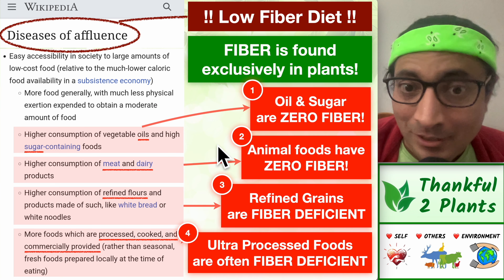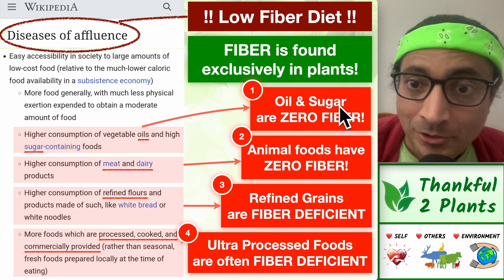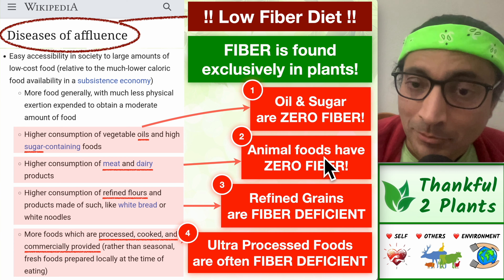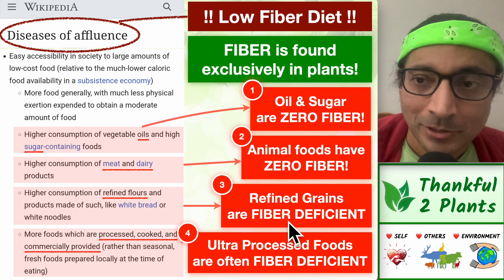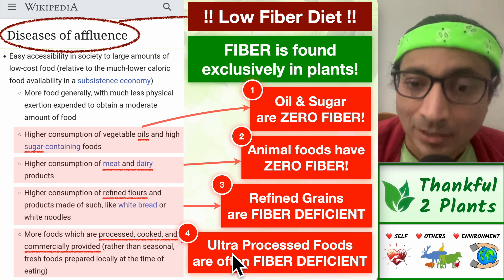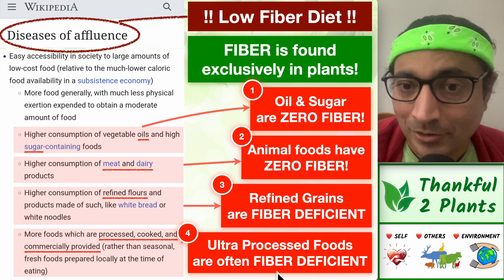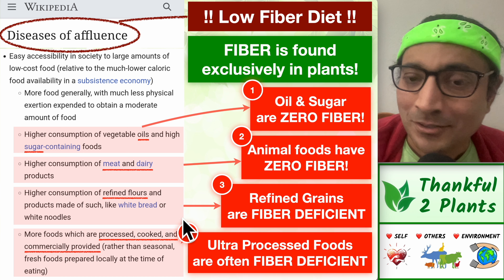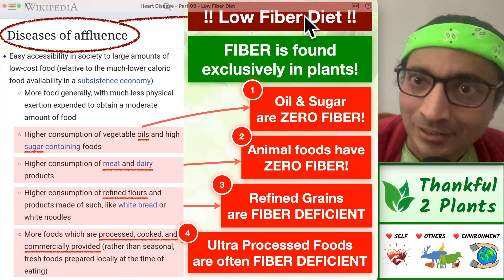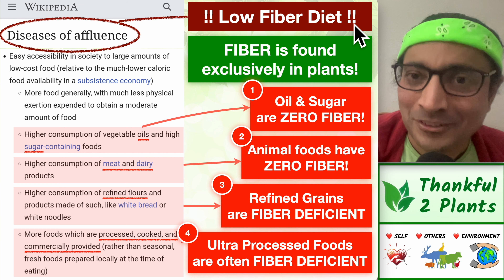So if we do these four things, what happens? Oil and sugar — macronutrient extracts — zero fiber. Animal products have zero fiber. Refined grains have much less fiber than whole grains. And ultra-processed foods are often fiber deficient. The more we do these four things, the lower the fiber intake. Every little step takes us in the direction of less and less fiber.